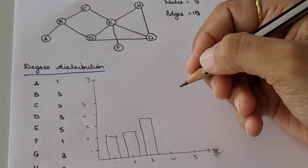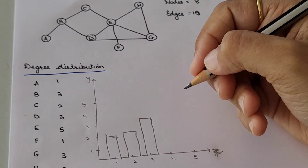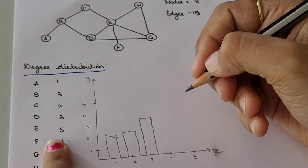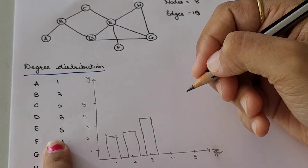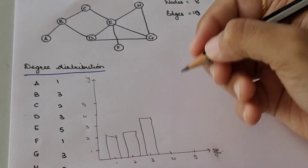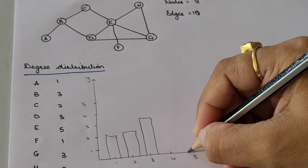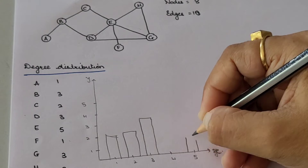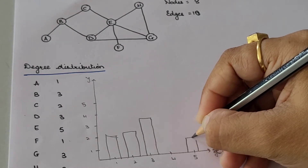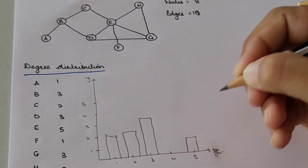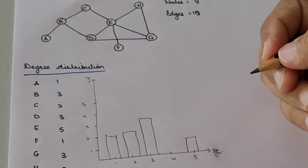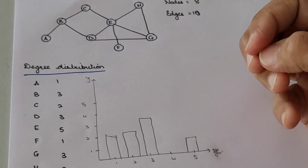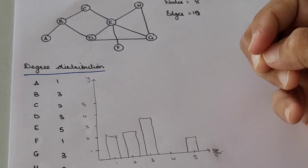For degree 4, you do not have any node. For degree 5, you have E — that is a single node. Plot it for the single node. So this is how you will be plotting the graph for degree distribution.